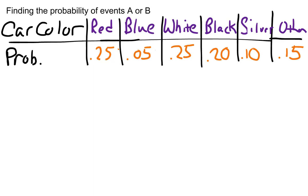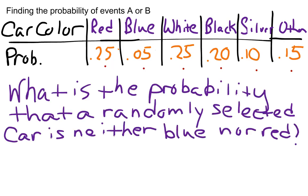5% of the cars are blue, 25% of the cars are white, 20% of the cars are black, 10% of the cars are silver, and 15% of the cars are another color. Notice, the sum of my probabilities adds up to 1. If the sum of your probabilities does not add up to 1, then you do not have a legitimate probability distribution with which to work. Now suppose I ask, what is the probability that a randomly selected car is neither blue nor red?